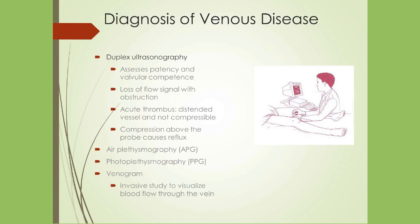Venous ultrasound or ultrasonography assesses the patency and the competence of the valves to provide the diagnosis of venous disease. In the diagnosis of DVT, thrombus prevents the vein from being compressible and there is loss of flow signal with the obstruction. It allows evaluation of the extent of thrombus, presence of mobile thrombus — which can increase the risk of pulmonary embolism — and differentiation of acute and chronic thrombus. Air plethysmography can also be used: the patient is placed supine, the thigh cuff inflated and rapidly deflated, and low outflow may indicate previous DVT or reflux. Photoplethysmography is an indirect measurement of venous obstruction and incompetence using infrared light. Venogram is an invasive means of diagnosis using IV contrast injected into the vein to produce a radiographic image.